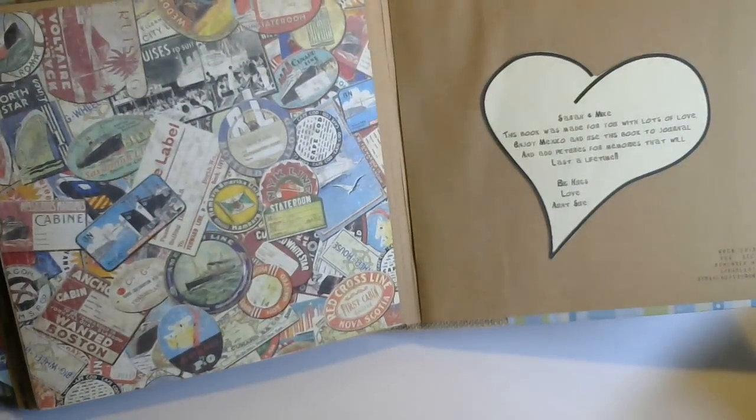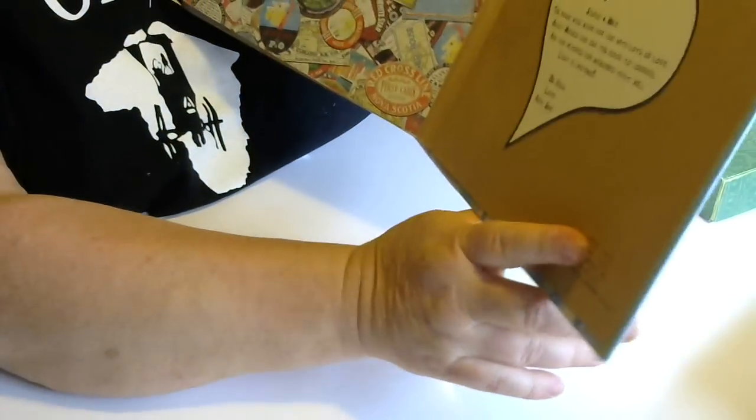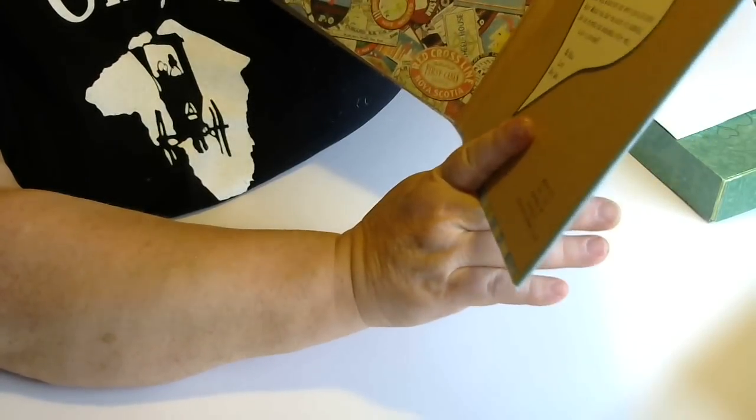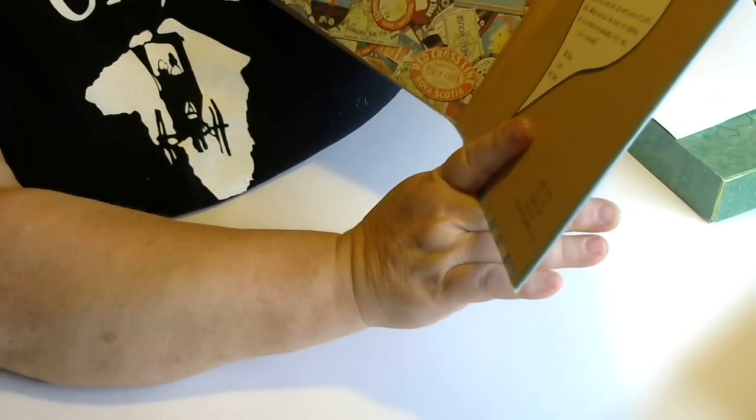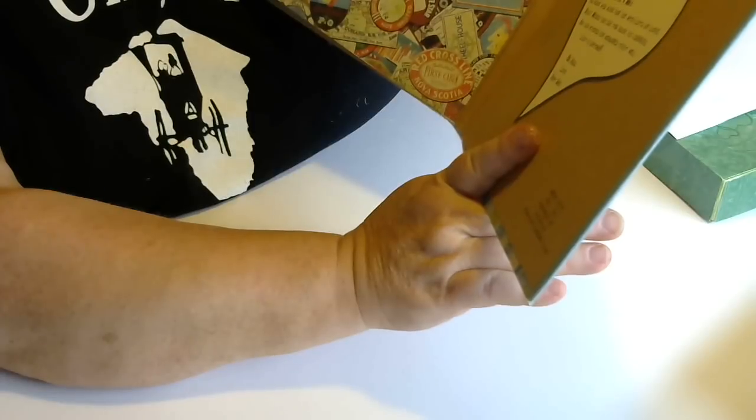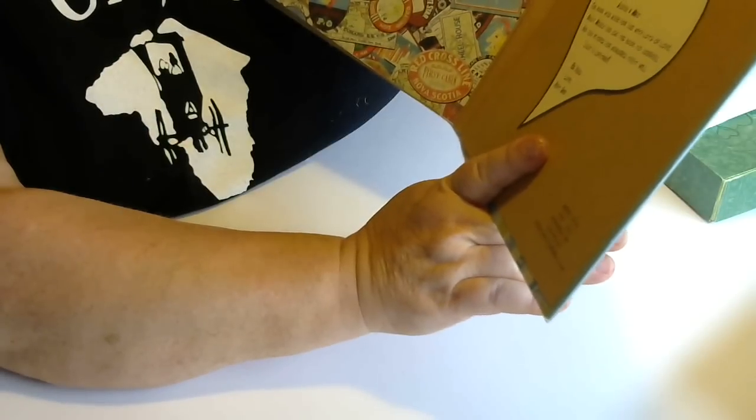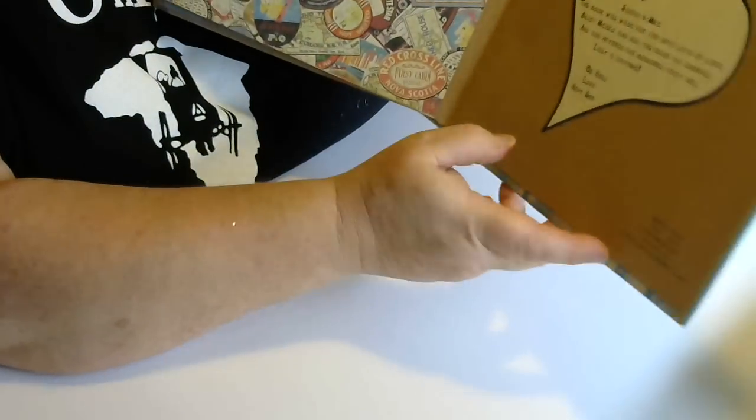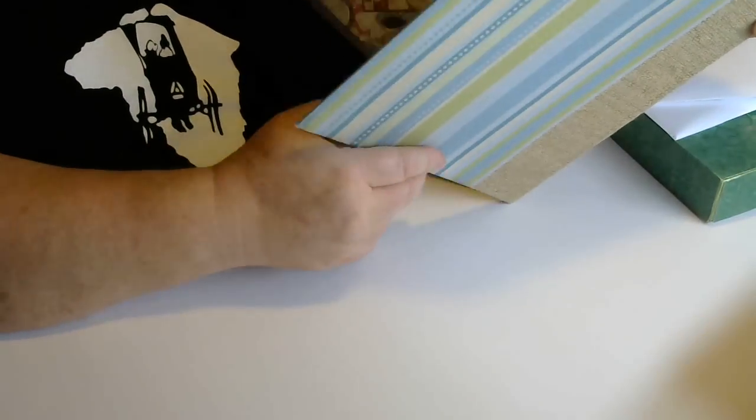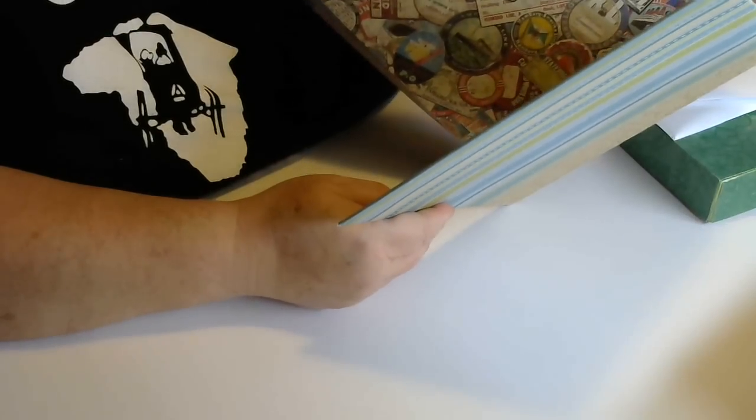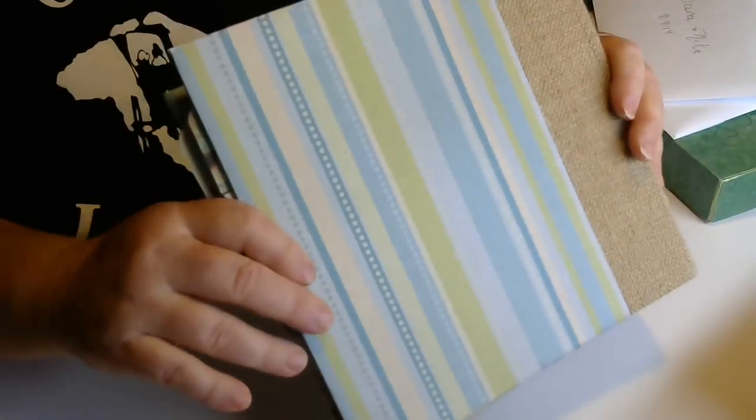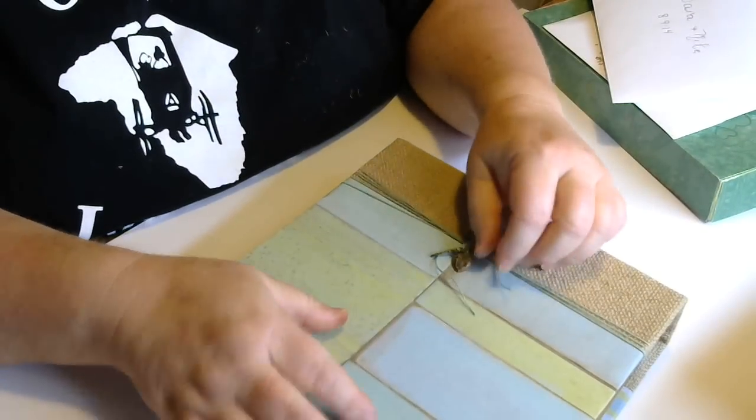And then on the back page, I just did this heart on my computer and I just typed a note. Sarah and Mike, this book was made for you with lots of love. Enjoy Mexico and use this book to journal and add pictures for memories that will last a lifetime. Big hugs, love, Aunt Sue. And then I put my stamp here. It says when this you see remember me. It has Scrap Lady and my email. So that's in the back. That's the book.